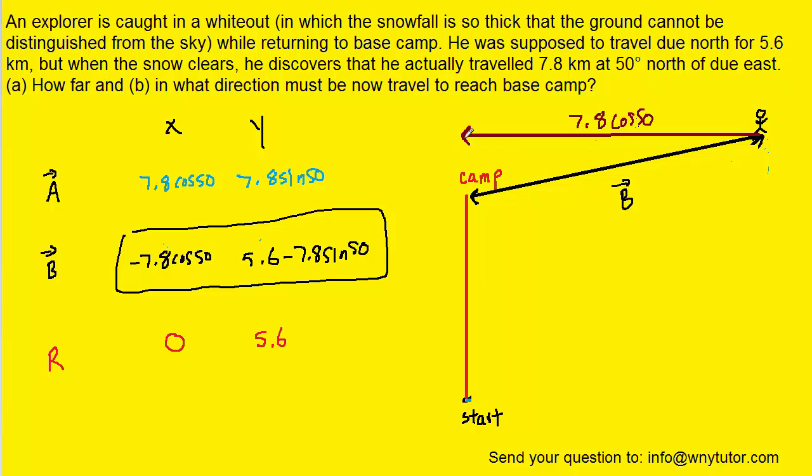And the magnitude of that component is 7.8 cosine of 50. And then to complete the journey back to camp, we would have to walk straight down. And that component is the Y component that we just determined. It's the 5.6 minus 7.8 sine of 50. Now why don't we pick up our calculators and actually compute 5.6 minus 7.8 sine of 50. And we should get about negative 0.375. Make sure your calculator is in degree mode when you do that.